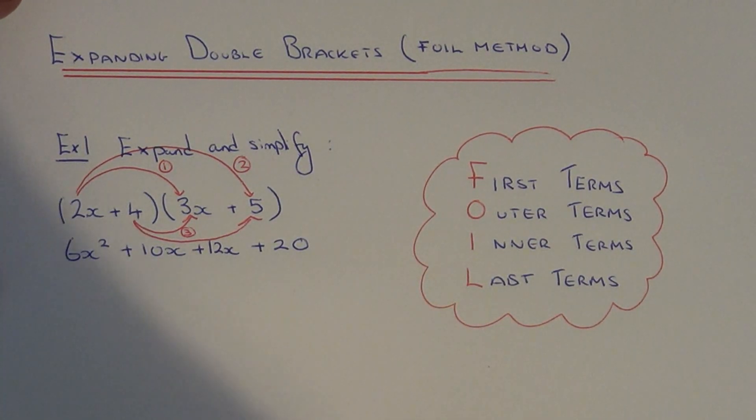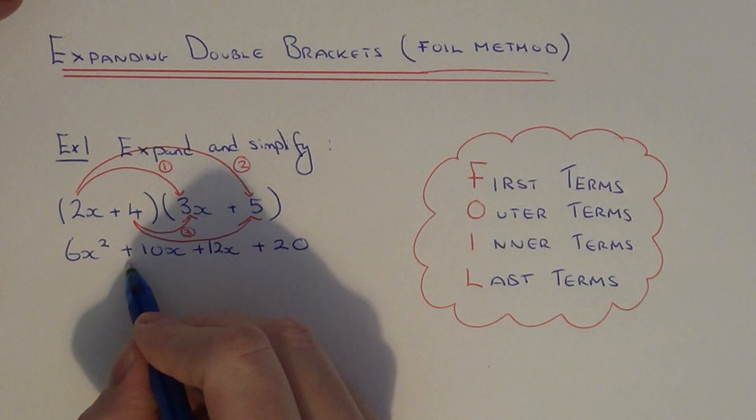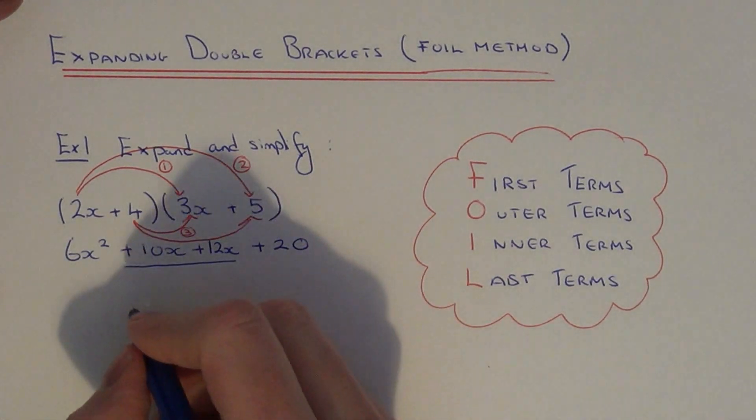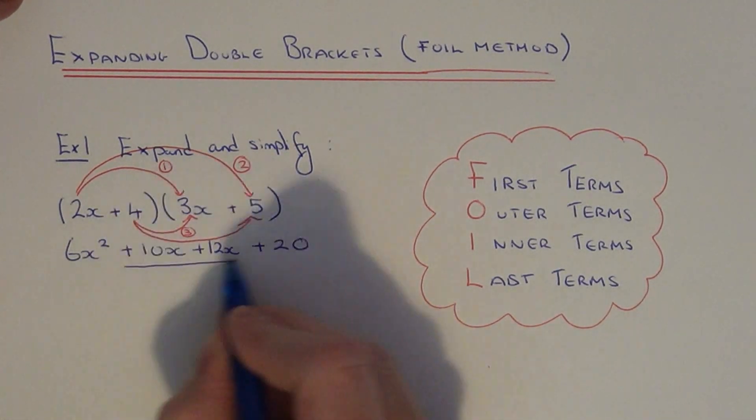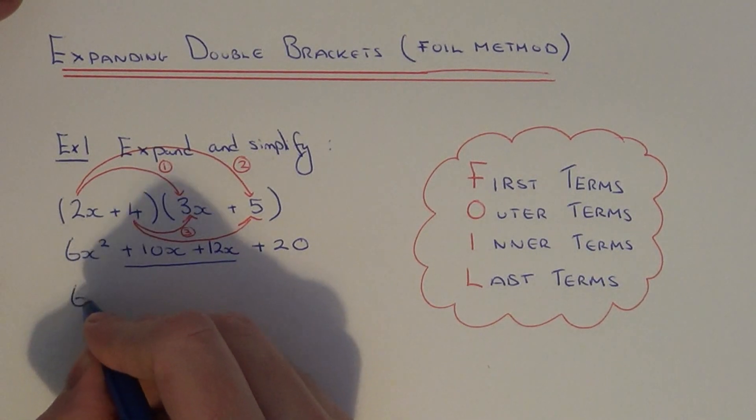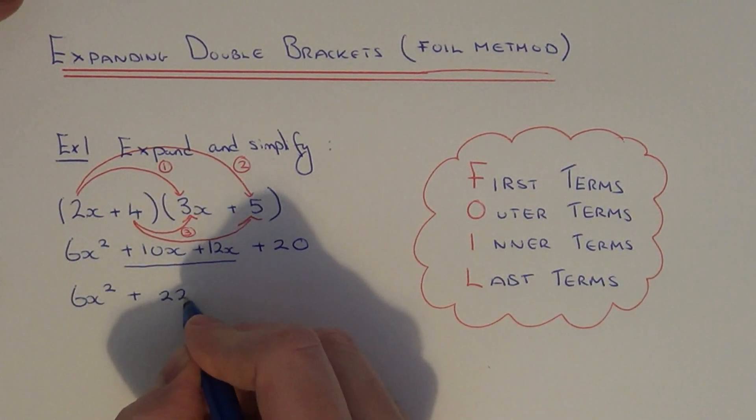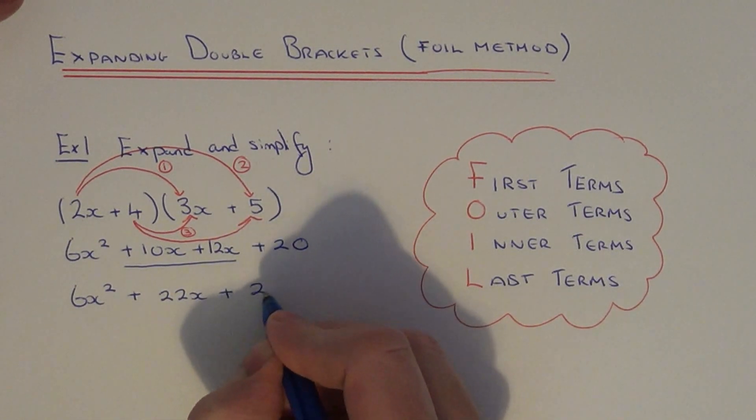All you have to do now is simplify the middle two terms, because these are both x terms. So 10x adds 12x is 22x. So if we write this on the next line and just copy the other two terms down, we get 6x squared plus 22x plus 20.